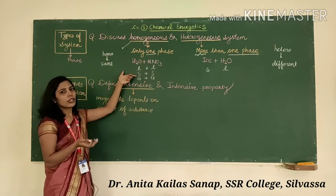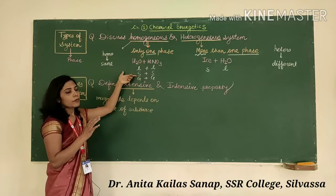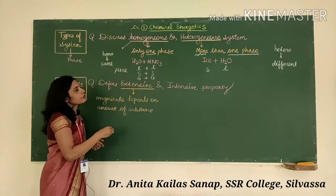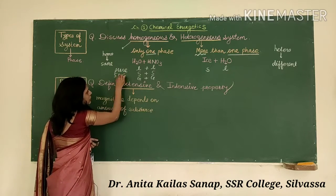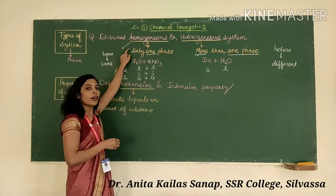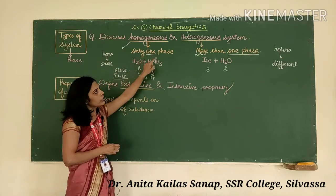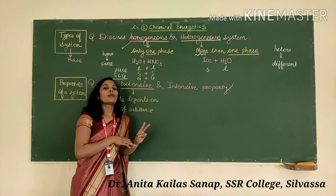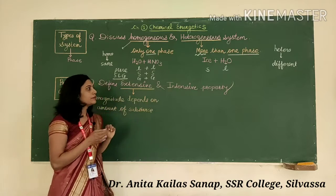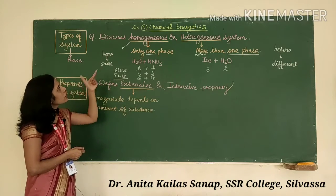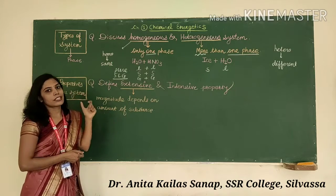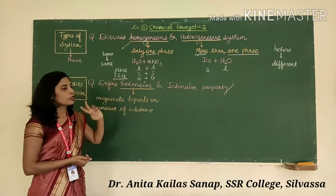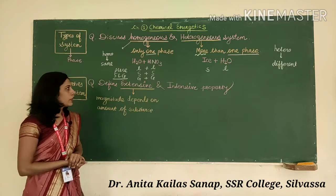A pure liquid, pure solid, or pure gas will also act as an example of a homogeneous system, since only one phase is present. In a heterogeneous system, there is the presence of two or more than two phases. So, depending upon the type of phase, systems are divided into these two types.